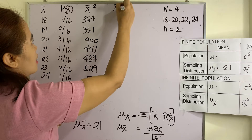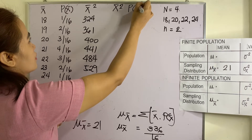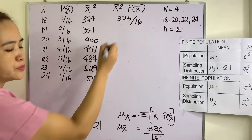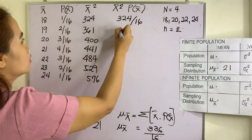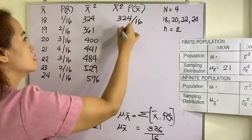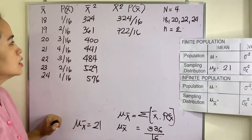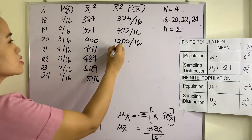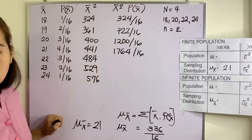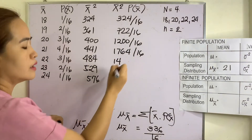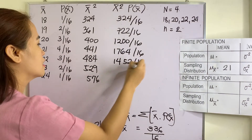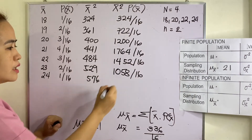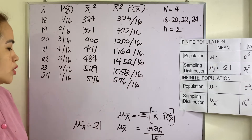We then multiply x-bar squared by the probability of x-bar. So we have 324 over 16, then 722 over 16 — that's 361 times 2 — then 1200 over 16, then 441 times 4 is 1764 over 16, then 1452 over 16, and 1058 over 16.